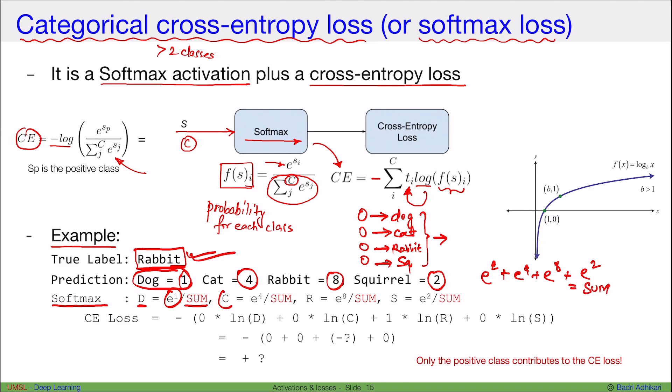And the probability for cat will be e to the power 4 divided by same sum. And the probability for rabbit will be e to the power 8 divided by the same sum. And the probability for squirrel will be e to the power 2 divided by the same sum.